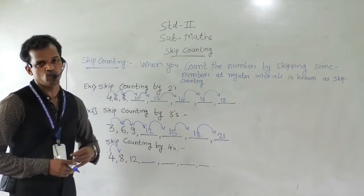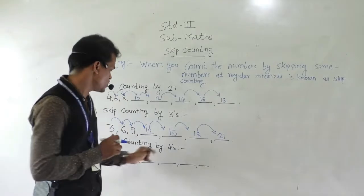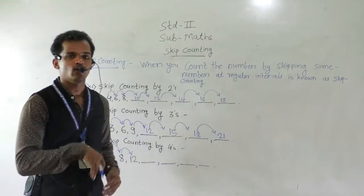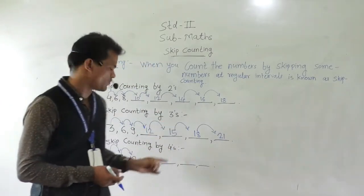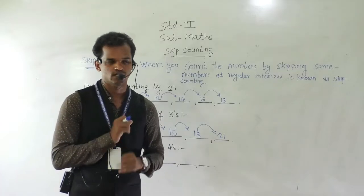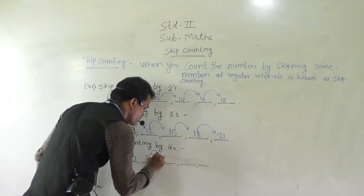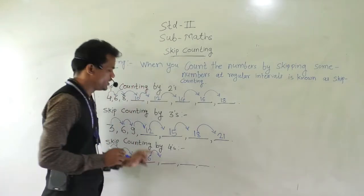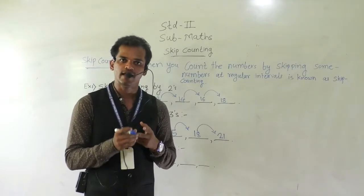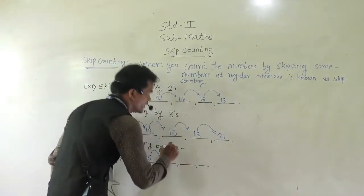Then 8 plus 4. After 8: 9, 10, 11, 12. So 8 plus 4 is 12. Now again count forward by 4: 12 after — 13, 14, 15, 16. Then again add 4 into 16: 17, 18, 19, 20. So here 20 will come.